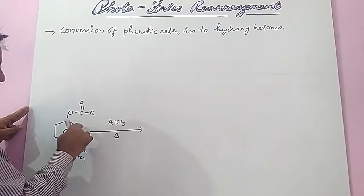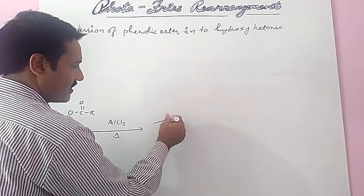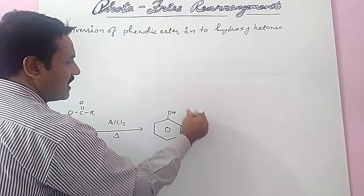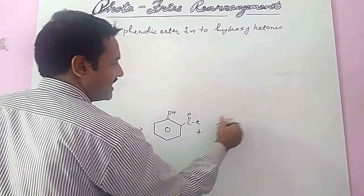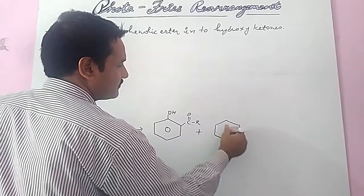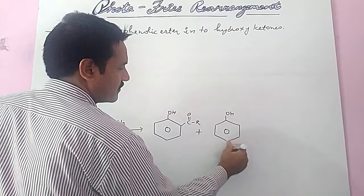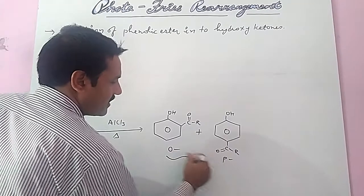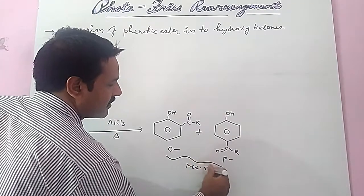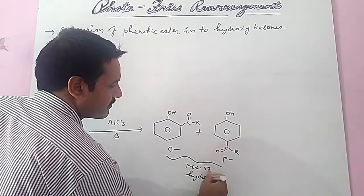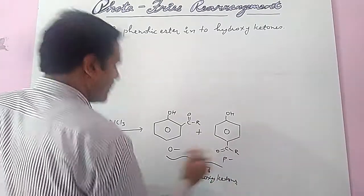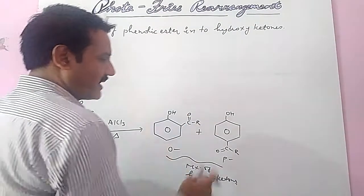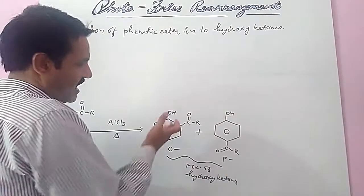The acyl group migrates to the ortho as well as the para position. This gives ortho and para hydroxy ketones — means a mixture of ortho and para hydroxy ketones forms in general Fries rearrangement. Generally, at lower temperature the para product is always formed, and at higher temperature the ortho product is formed.